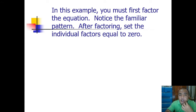Let's proceed to the next. In this example you must first factor the equation. Notice the familiar pattern. After factoring, set the individual factors equal to 0. 9x²-4=0. How do we solve this by factoring?